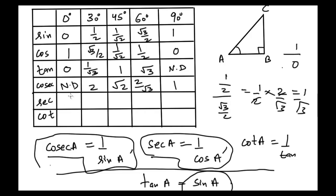Secant is the reciprocal of cosine: sec 0° = 1, sec 30° = 2/√3, sec 45° = √2, sec 60° = 2, and sec 90° is not defined because 1/0 is undefined.